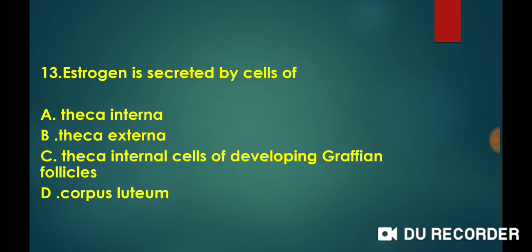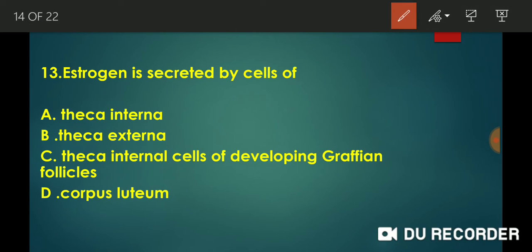Estrogen is secreted by which of the following? Estrogen is secreted by the theca internal cells of the developing Graafian follicles. That is the answer to this question.